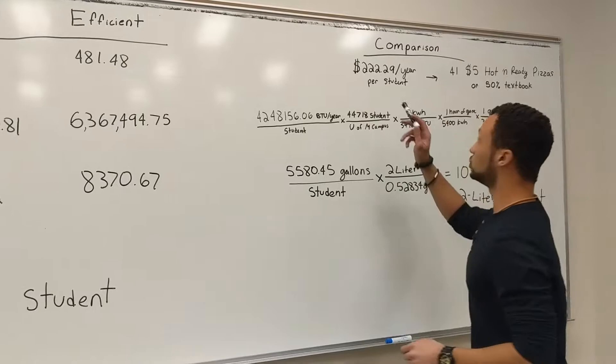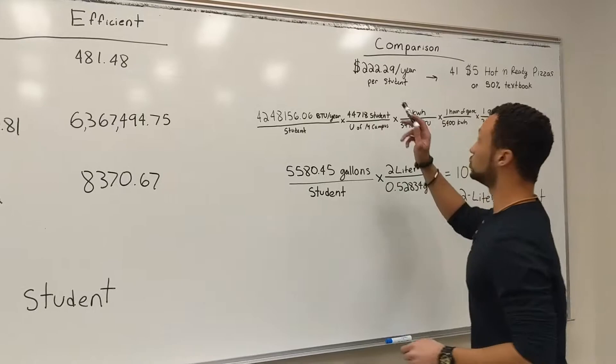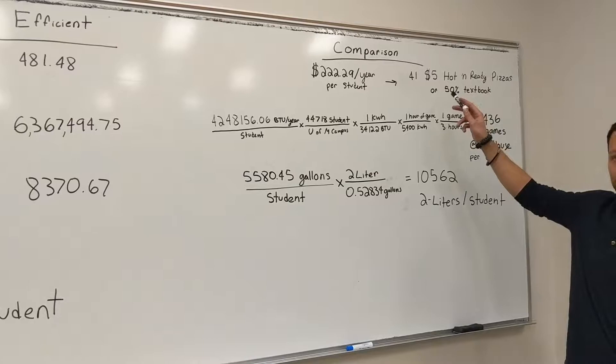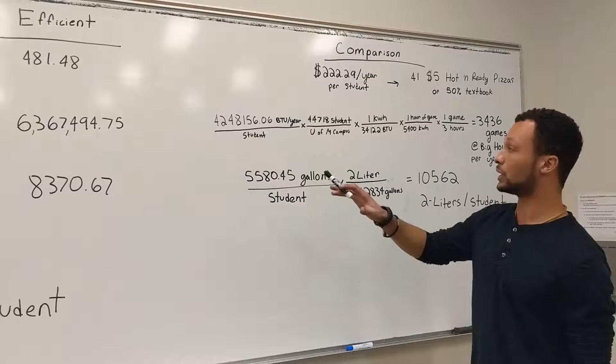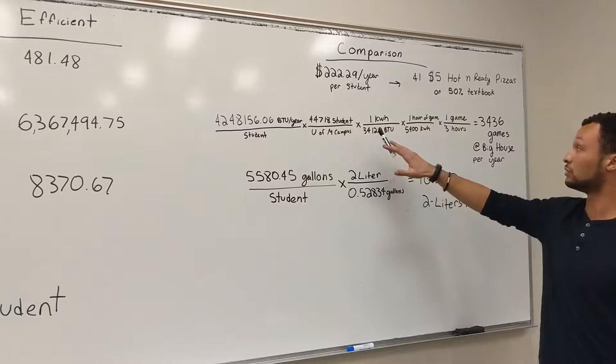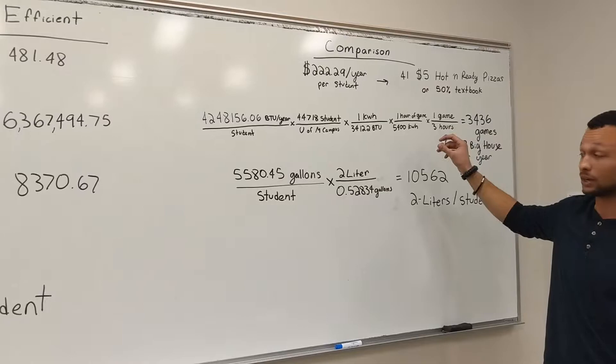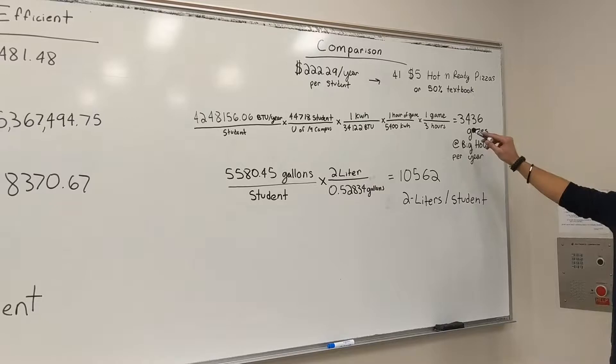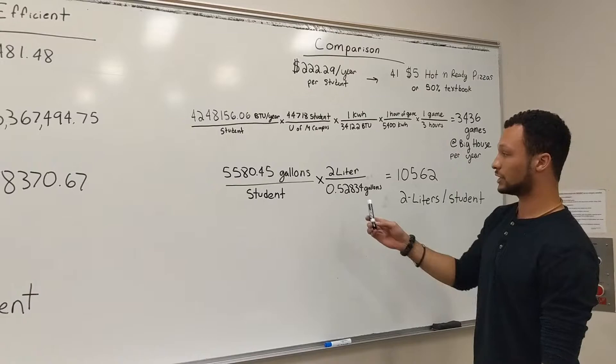Now, in comparison, what that looks like is about $222 per year per student, which comes out to be 41 $5 hot and ready pizzas, or about 50% of a textbook. Now, if we want to look at the energy impact, we did a quick calculation to compare the BTUs per year per student to the greater U of M campus, and then we converted that to see it's about 5,400 kilowatt hours per hour of a game at the Big House. During that conversion, we found that the amount of energy saved would be enough to power 3,436 games at the Big House per year. Finally, looking at gallons per student, going off with the food topic we love so much, 2 liters conversion is about 10,562 liters per student per year.